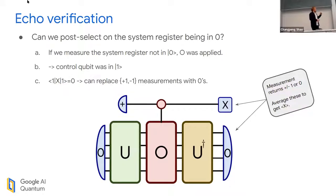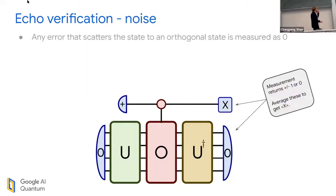For the fraction of experiments where the state register doesn't return to zero, I can take all the plus or minus one measurements from X, and they're going to average out to zero, regardless of what my operator was or state was. All of the information that gives me the expectation value of O is hidden in the set of measurements that did return to zero. Crucially, I'm replacing the measurement with a zero, not actually post-selecting.